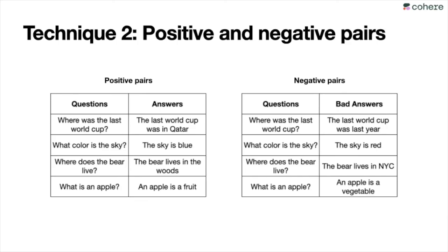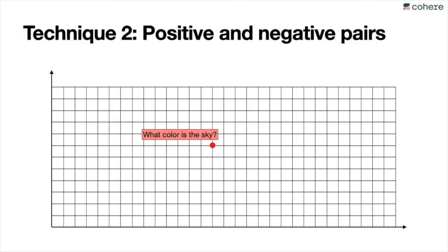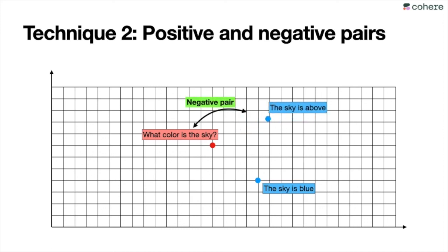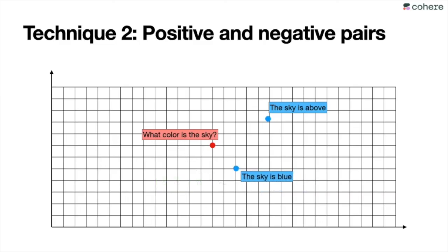Another technique uses positive and negative pairs. We have questions with correct answers as positive pairs, and questions with bad answers — very close to correct but not quite — as negative pairs. We then adjust the embedding: for a negative pair like 'What color is the sky?' with bad answer 'The sky is above,' we move them apart in the embedding; for a positive pair with the correct answer 'The sky is blue,' we move them closer. We optimize the embedding to answer questions properly, and this has proven very useful in improving search models vastly.